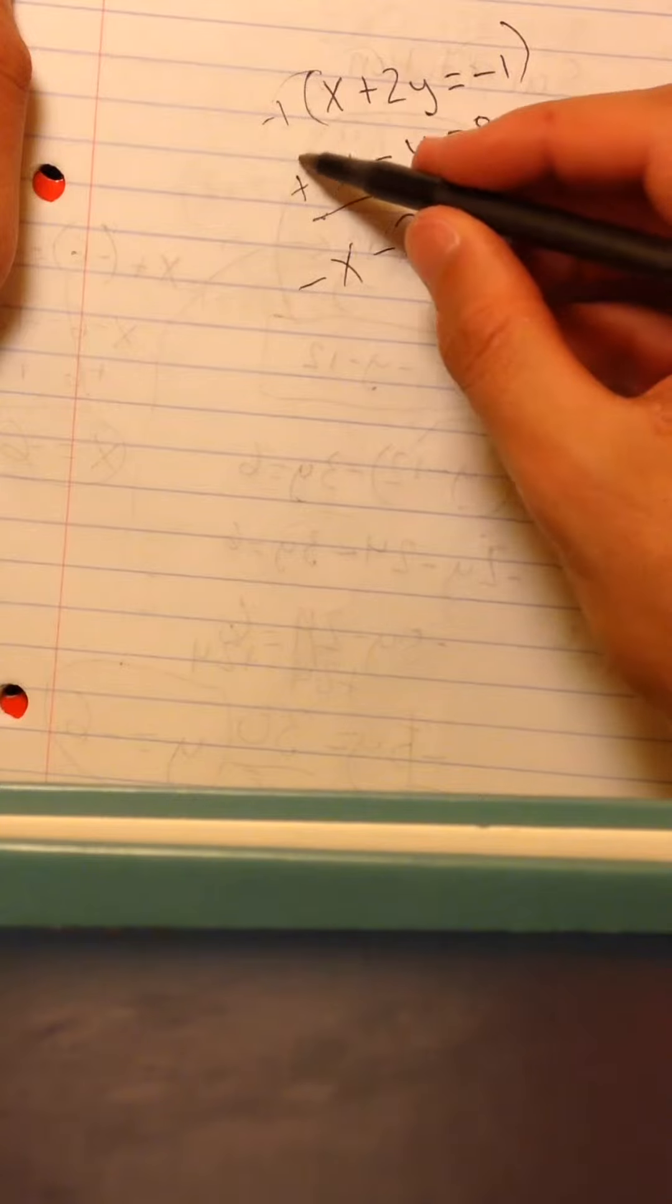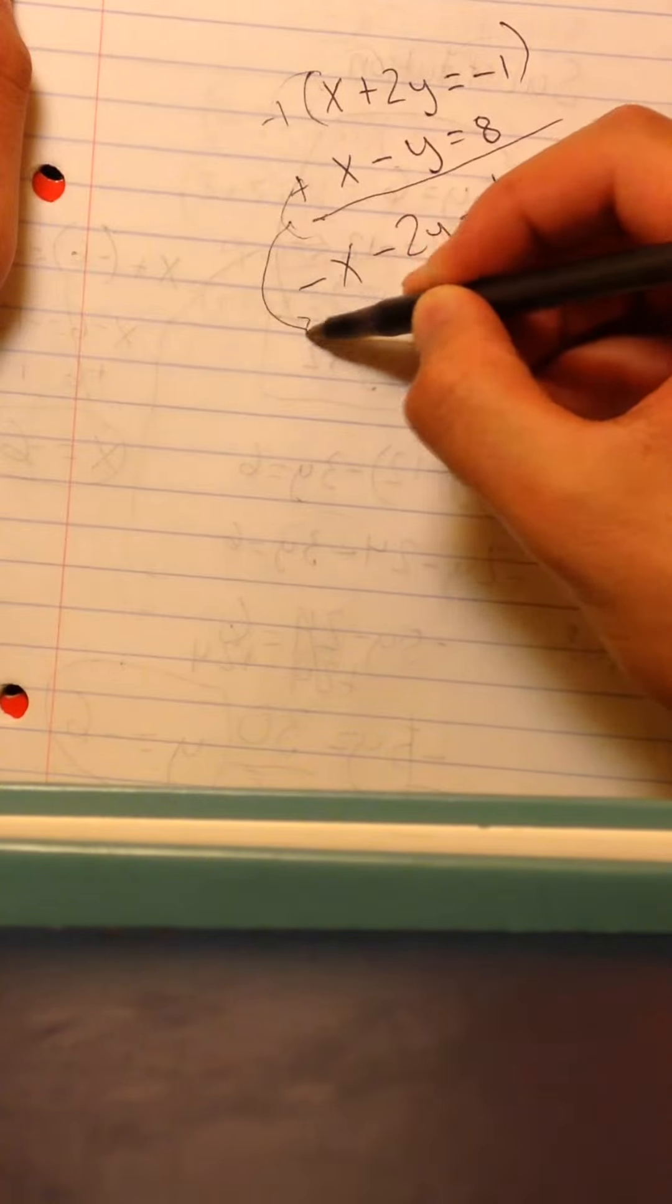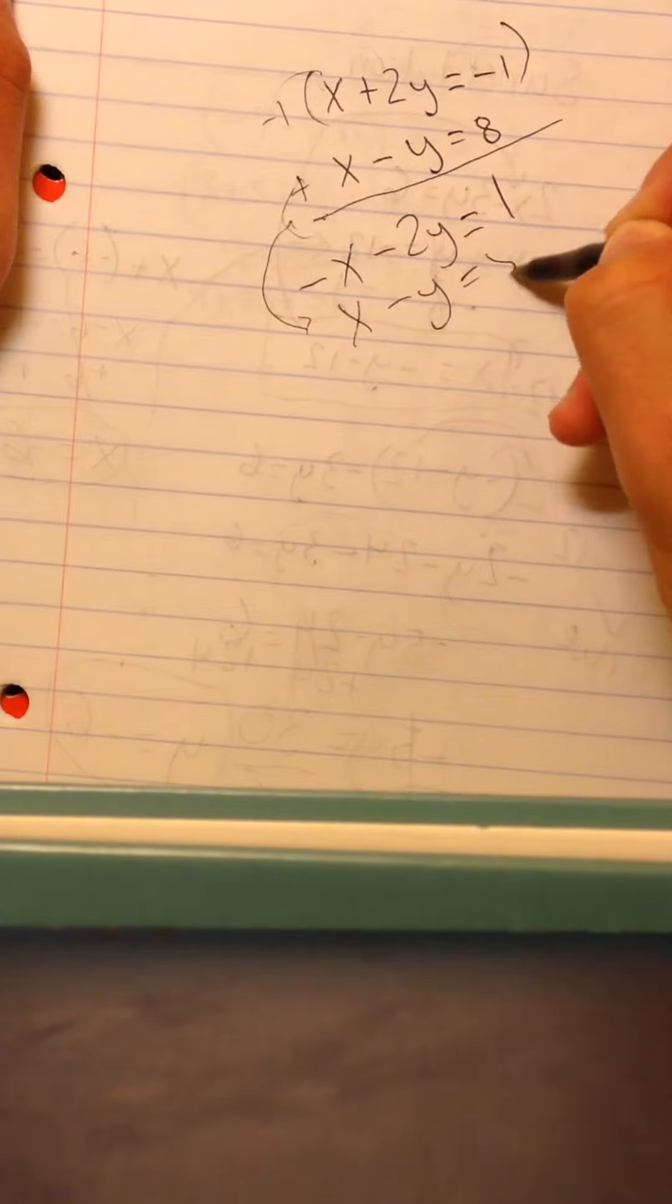And then we're just going to write this down here, it's going to be x minus y is equal to 8.